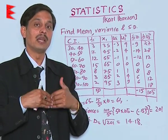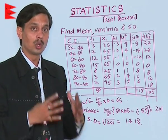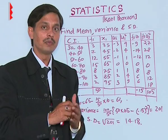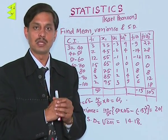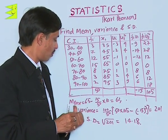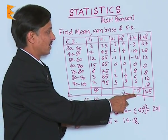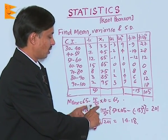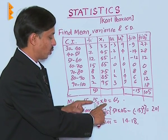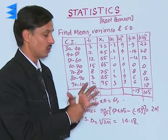Using the step deviation method, mean = assumed mean + (Σfᵢuᵢ/Σfᵢ) × h. Mean = 65 + (-15/50) × 10 = 62.